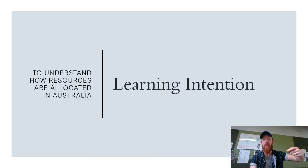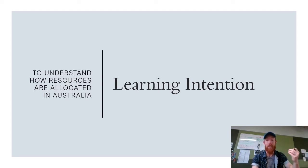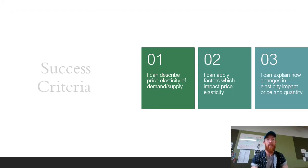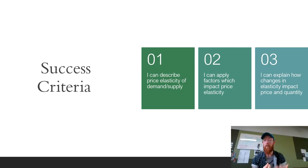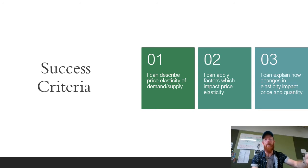Our learning intention is to understand how resources are allocated in Australia. Most specifically today, we're going to be looking at how our numerical or money resources or supply is impacted and how that allocation changes based on changes in price and how that impacts quantity. Success criteria is that you can describe price elasticity of demand and supply, apply factors that impact price elasticity of supply, and explain how changes in elasticity impact price and quantity — it's really important that you talk about how both price and quantity are impacted and how they relate.